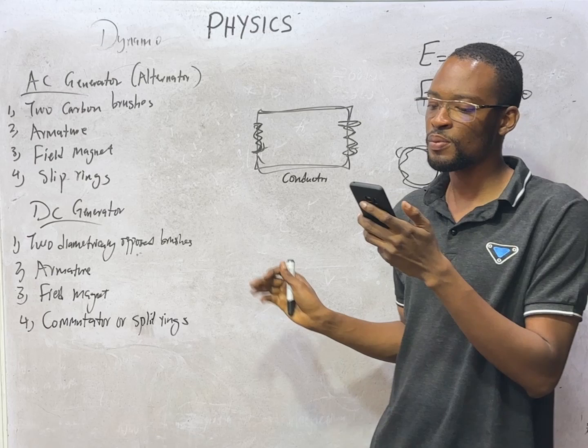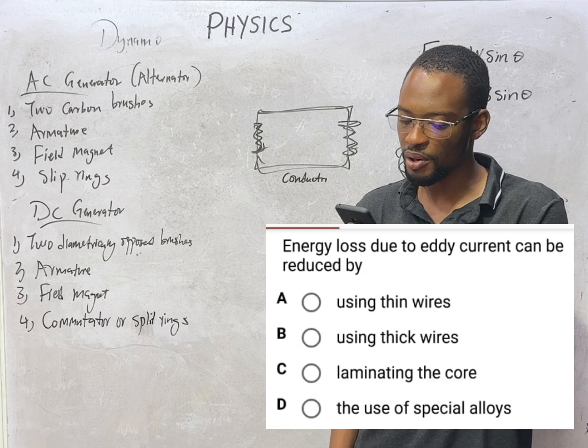Now, eddy loss due to eddy current is reduced by laminating the core. When we laminate the core, there will be reduction in eddy current.